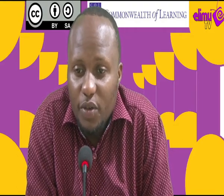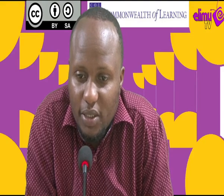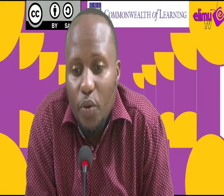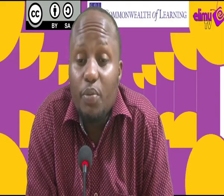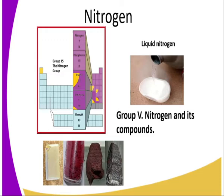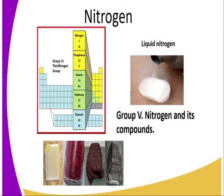Nitrogen can exist in three states depending on the prevailing temperature. We may have liquid nitrogen as illustrated in the diagram, and also at room temperature, because of its boiling point, it exists as a gas. Nitrogen also occurs combined with other elements giving us compounds of nitrogen, such as nitrates — for example, sodium nitrate — which occur naturally as rocks or minerals within the earth's surface.